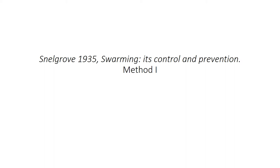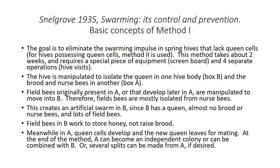Basic concepts of Method 1. The goal is to eliminate the swarming impulse in spring hives that lack queen cells. For hives possessing queen cells, Method 2 is used, which is not covered in this presentation. This method takes about two weeks and requires a special piece of equipment called a screen board, which the beekeeper will probably need to build themselves, and four separate operations or hive visits.